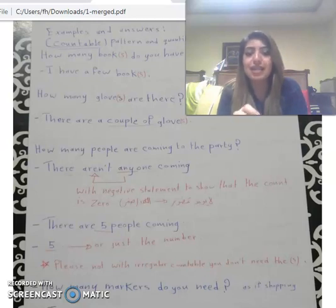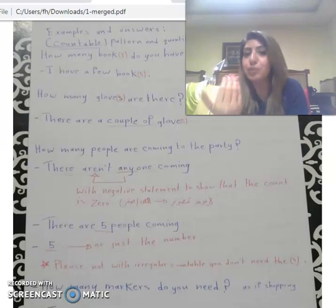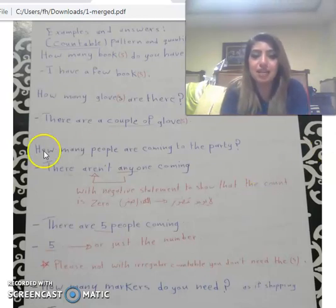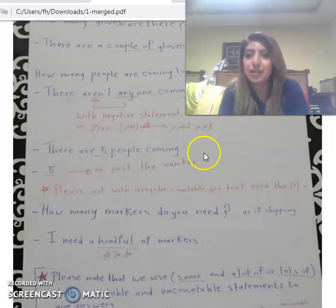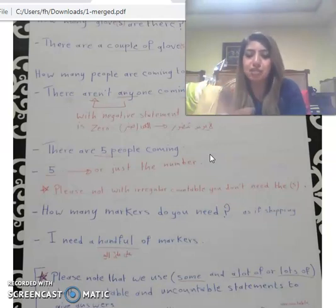With a negative statement, we use 'any' to show that the count is zero — meaning no people are coming to the party. Answer 2: 'There are five people coming.' We can just say the exact number with a countable noun: 'five people'. Or we can just answer with 'five'. Please note: with irregular countable nouns, you don't need the S.